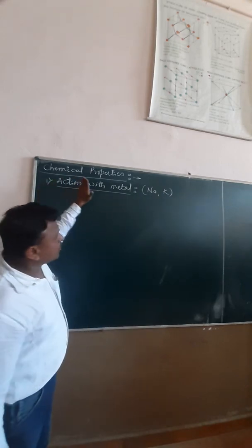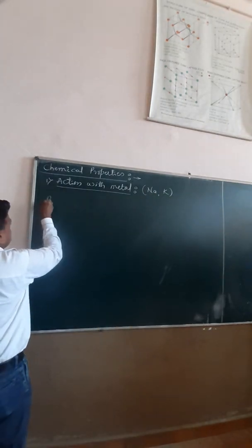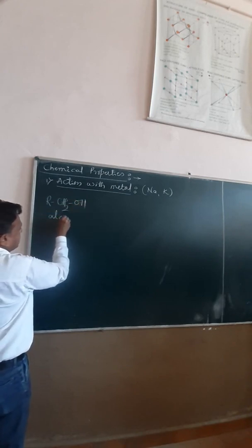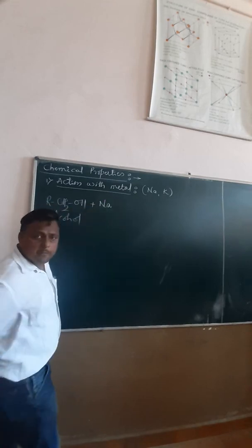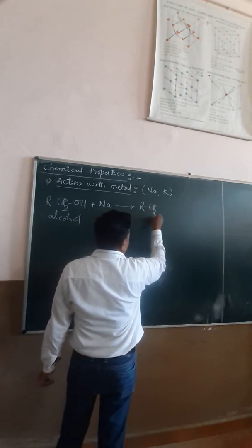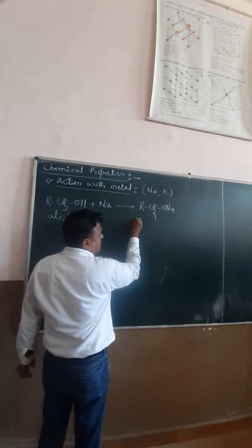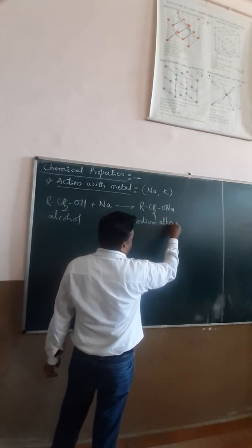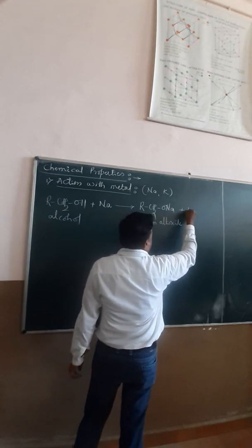So what happens when alcohol reacts with electropositive metals? We consider an example. This is a primary alcohol reacting with sodium metal to form a product RCH₂ONa. It is a very important component — we call it sodium alkoxide — and it releases hydrogen gas.